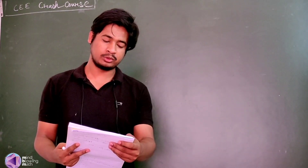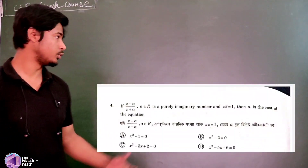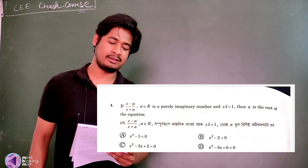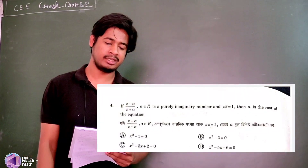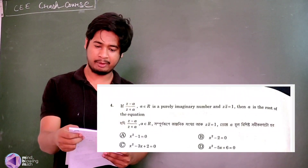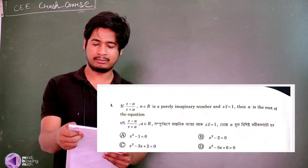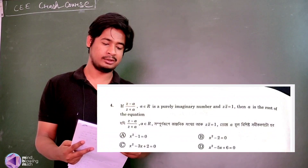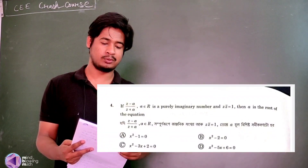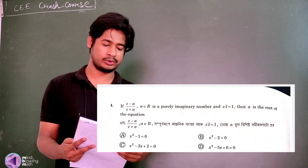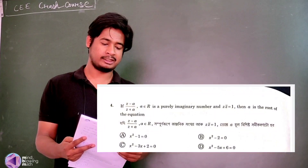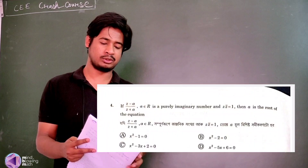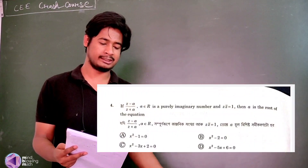First question is on complex numbers. If (z minus a) divided by (z plus a), where a belongs to real numbers, is a purely imaginary number, and z into z-bar is equal to 1, then a is the root of the equation: x squared minus 1 equals 0, or x squared minus 2 equals 0, or other options.